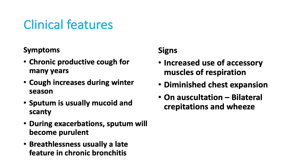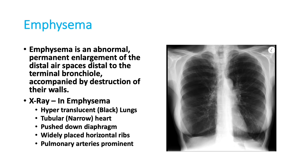Bilateral crepitations and wheeze are present. Emphysema is another type of COPD where lungs are maximally expanded. Emphysema is an abnormal permanent enlargement of the distal airspaces distal to the terminal bronchiole, accompanied by destruction of their walls. The X-ray appears black, showing more air trapped inside the lungs. You can see the tubular heart — the heart is compressed from the sides because of air trapped in the lungs. The diaphragms are compressed and pushed down.